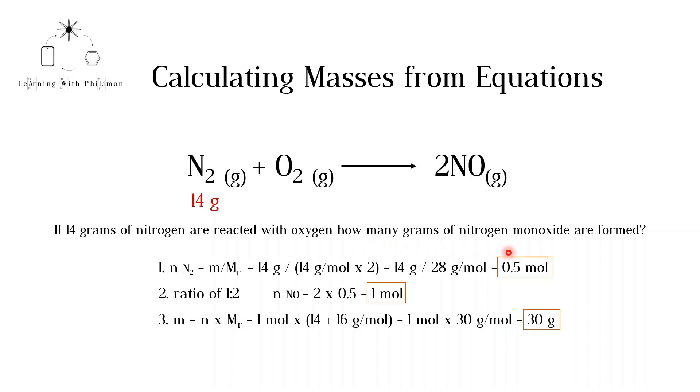14 grams of nitrogen are equivalent to 0.5 mole. The second step is to determine the number of moles of nitrogen monoxide formed. Since there is a 1 to 2 ratio, 1 mole of nitrogen makes 2 moles of nitrogen monoxide. In this case, only 0.5 moles of nitrogen are present, so only 1 mole of nitrogen monoxide can be made.